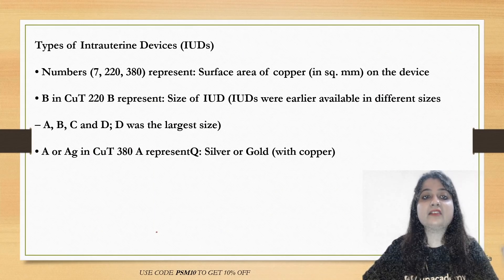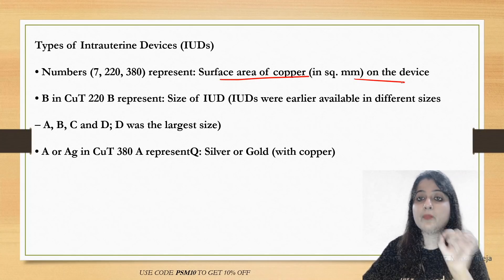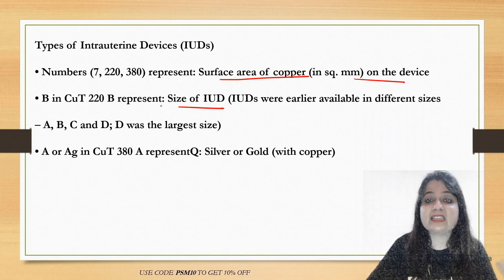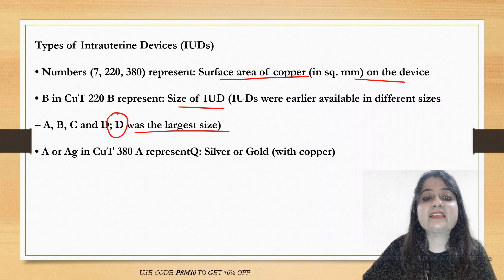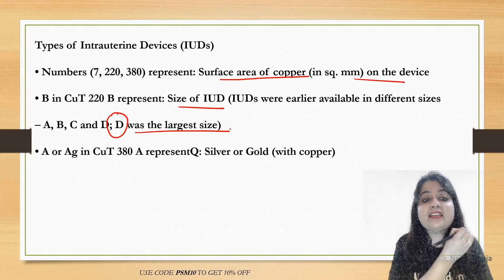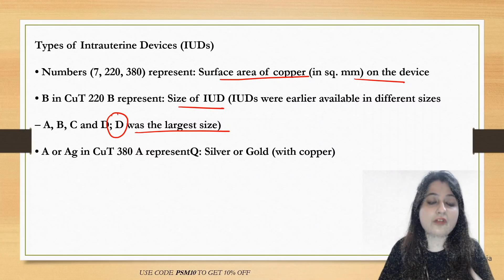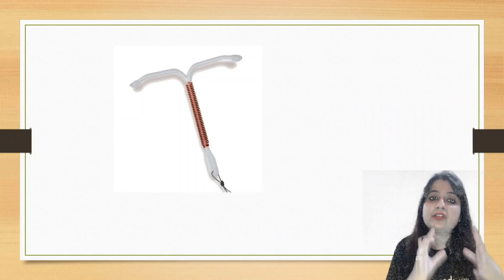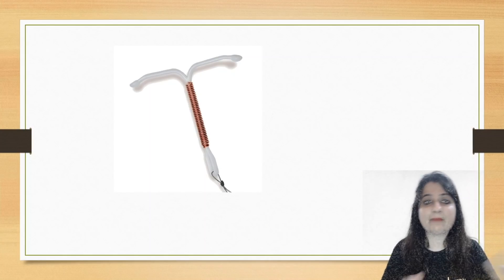The number represents the surface area of copper in millimeter square on the device. The letters B, C, D represent the size of the intrauterine device — D is the largest. If I say Copper T380AG, that indicates silver or gold wire is wound. For Copper T380A, copper wire is on the horizontal stem as well as the vertical stem — the full T shape.